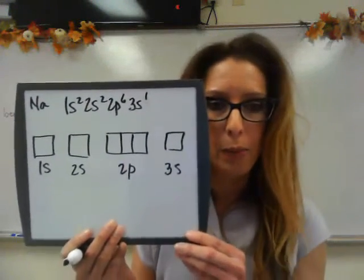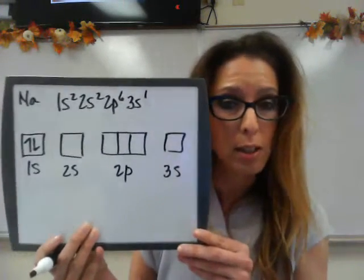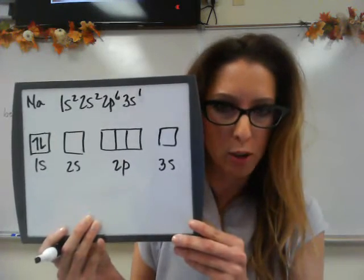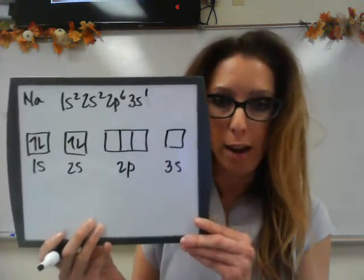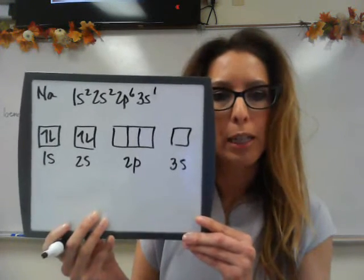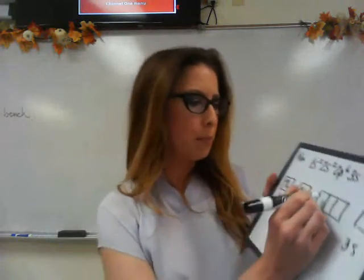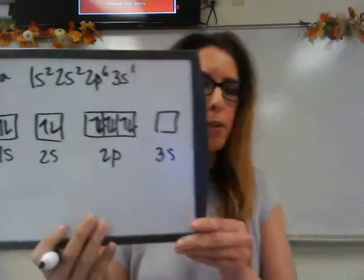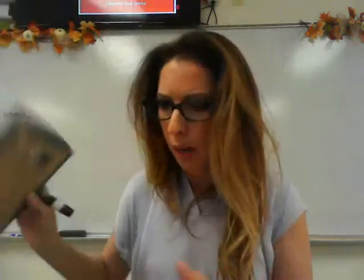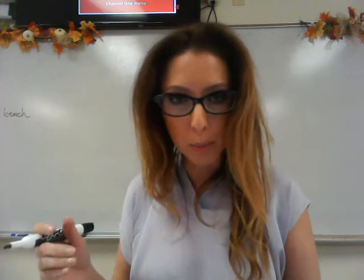For 1S I put a half arrow up and a half arrow down — electrons spin in opposing directions because they're the same charge. For 2S, same thing: up and down. For 2P with six electrons, you must fill each box singly first — one in the first, one in the second, one in the third — then go back and pair them up. You can never have both half arrows pointing in the same direction.